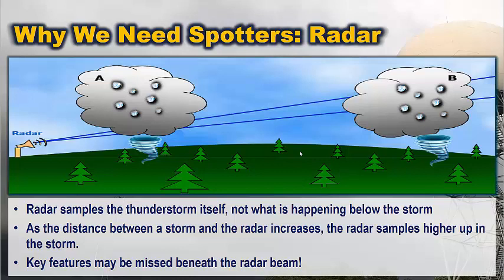When you look at Storm B, that tornado is well below the bottom of the cloud where the beam is located up higher. So the beam is only going to catch that hail. Whereas closer in, you might actually miss some of the hail, but you could see some good rotation in the lower levels.